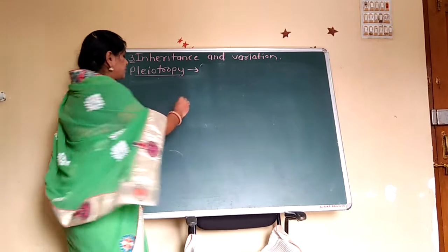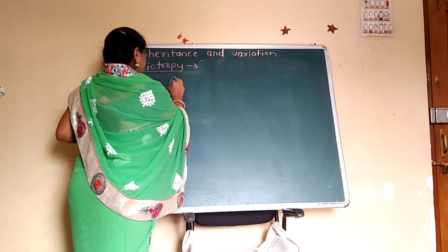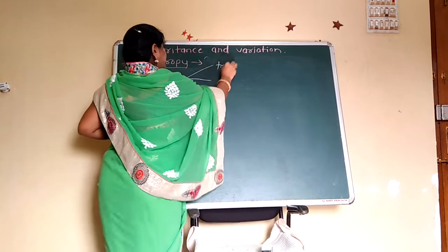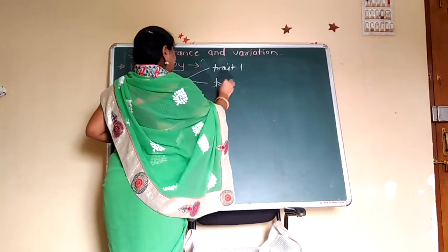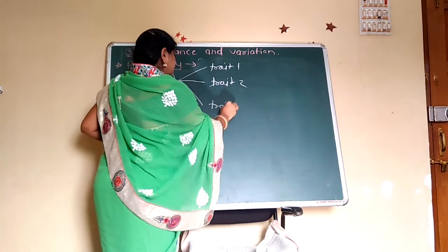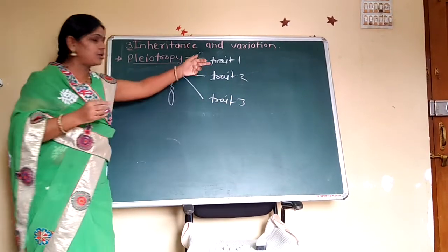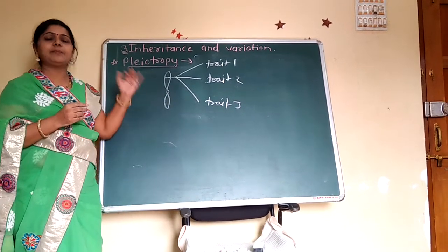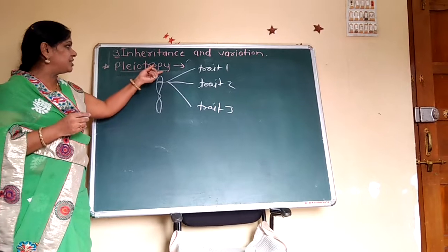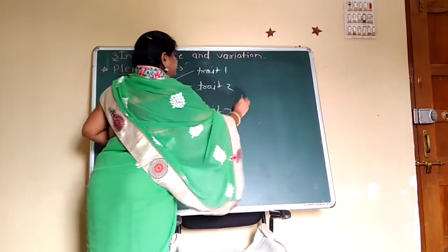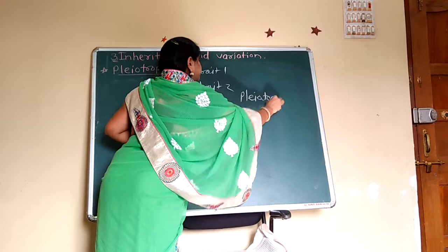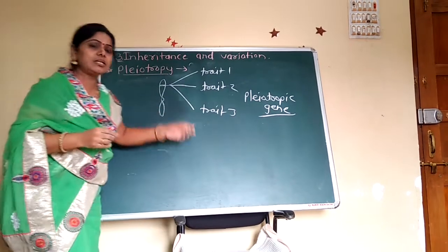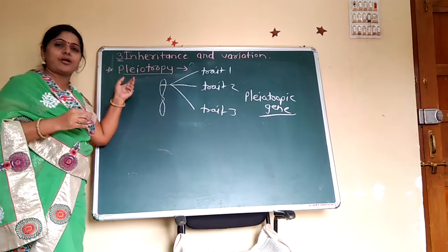Here we see one gene controlling many traits: trait first, trait second, trait third. One gene controls many traits, or multiple traits. That is called a pleiotropic gene, and the phenomenon is called pleiotropy, which is also called pleiotropism.